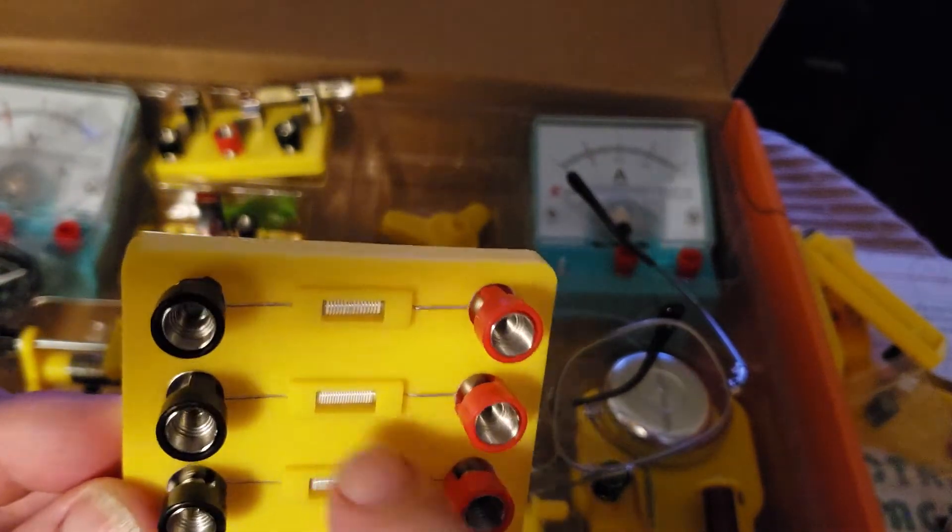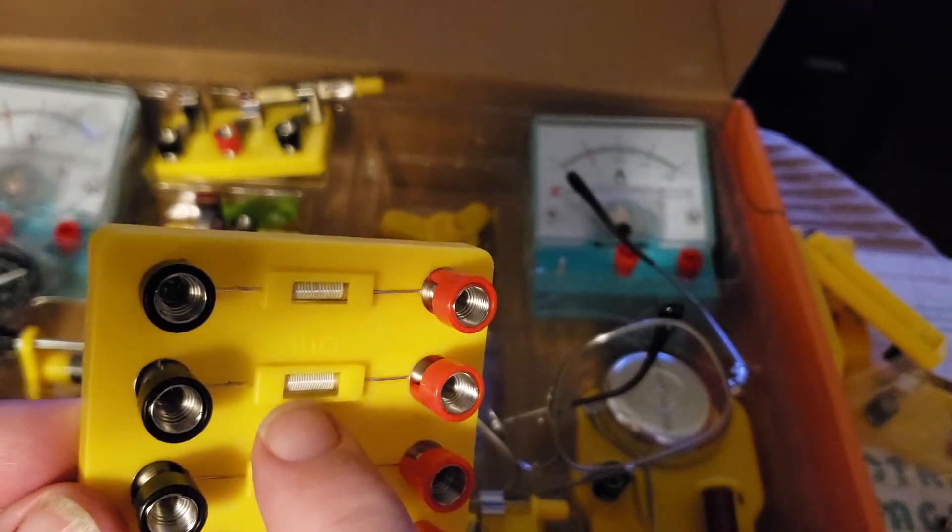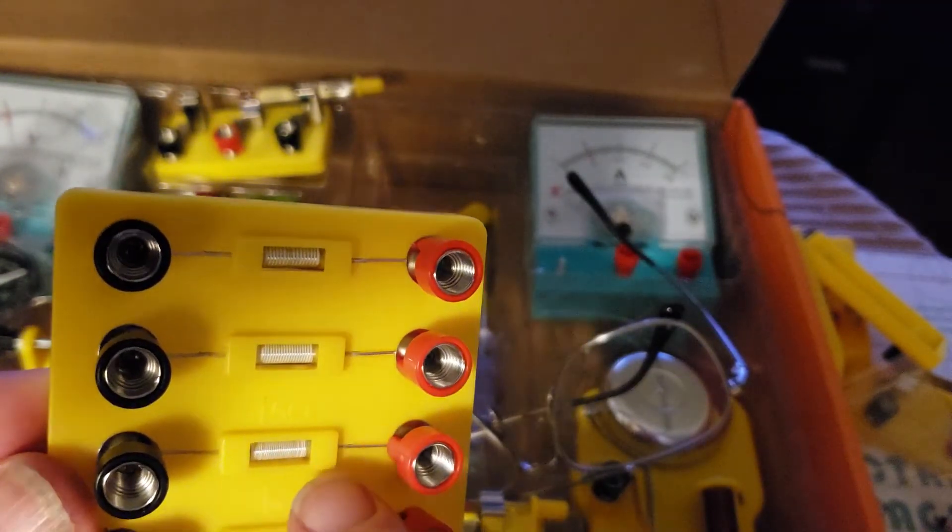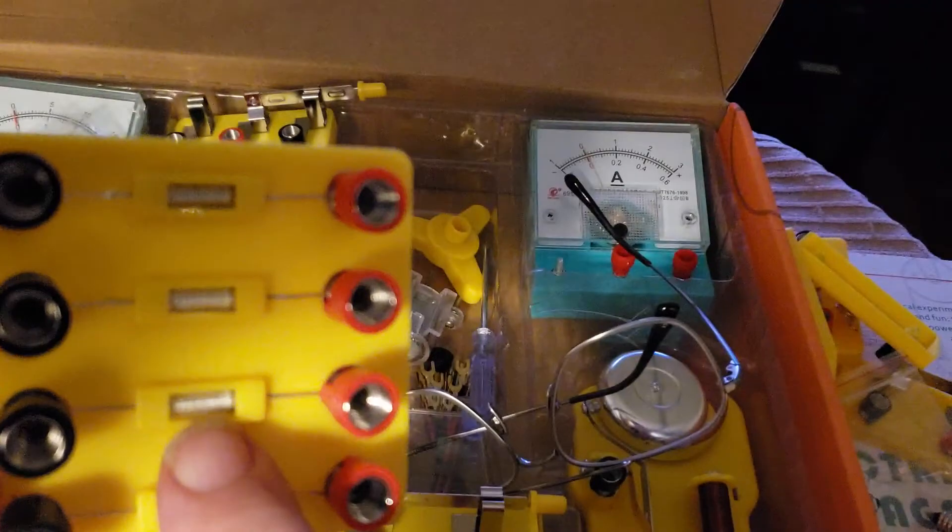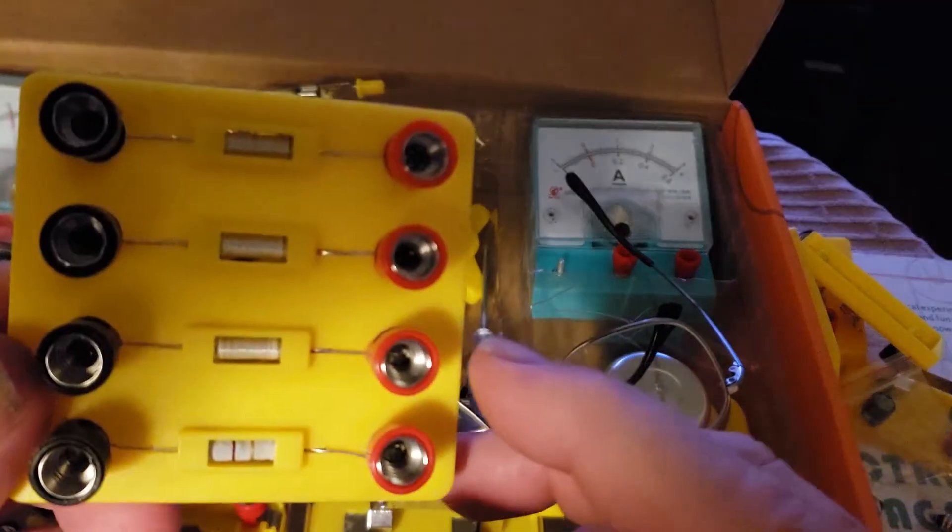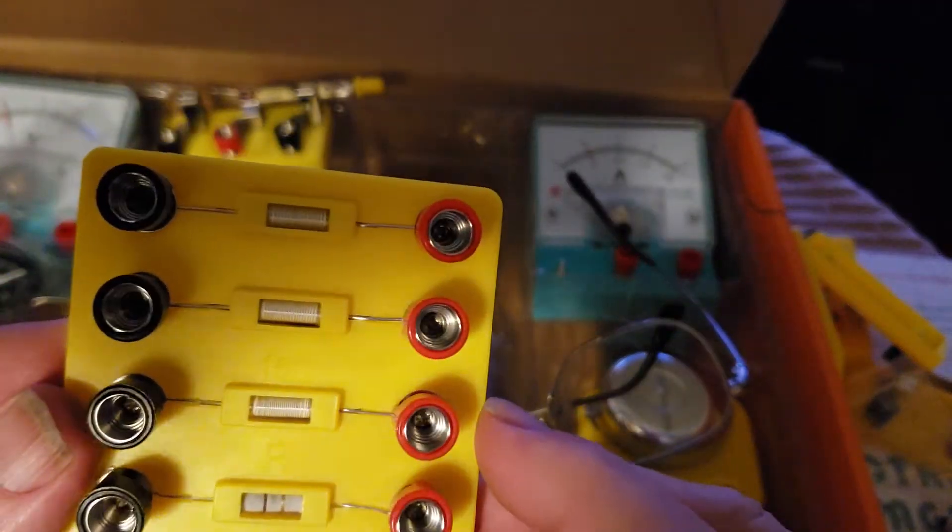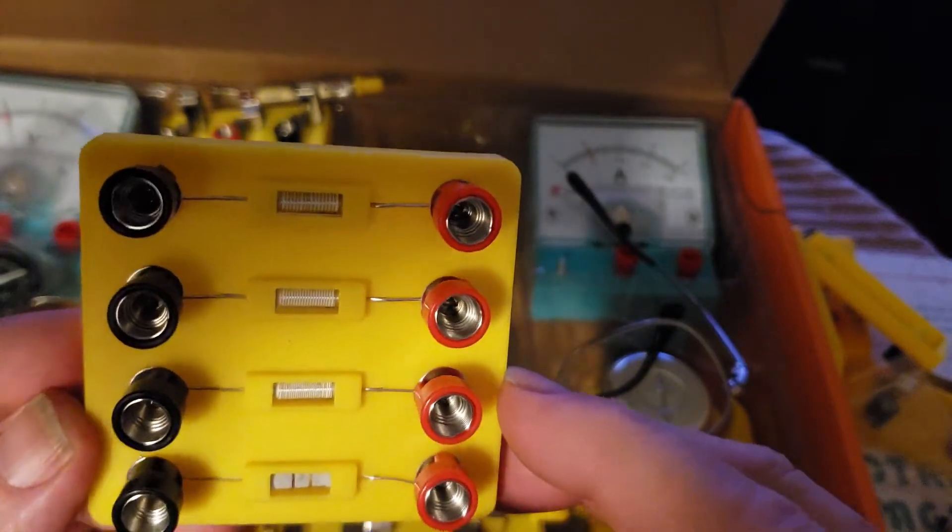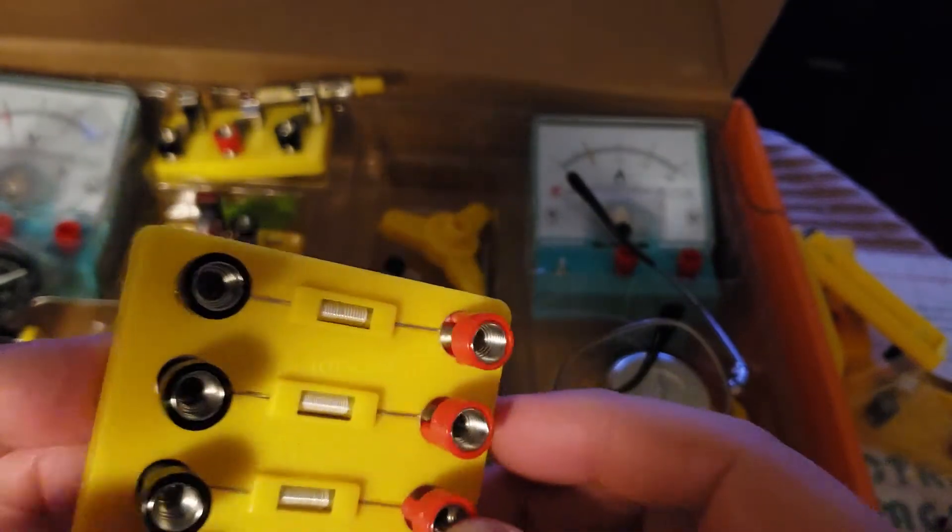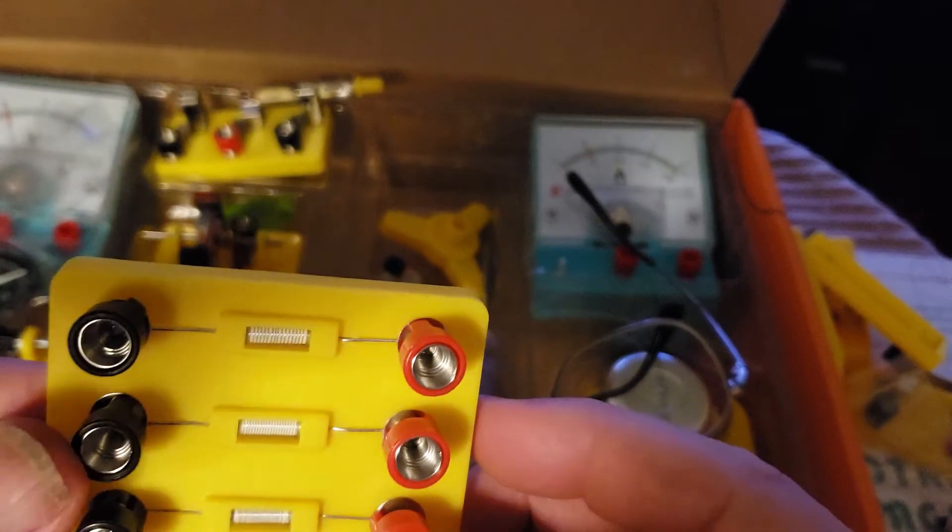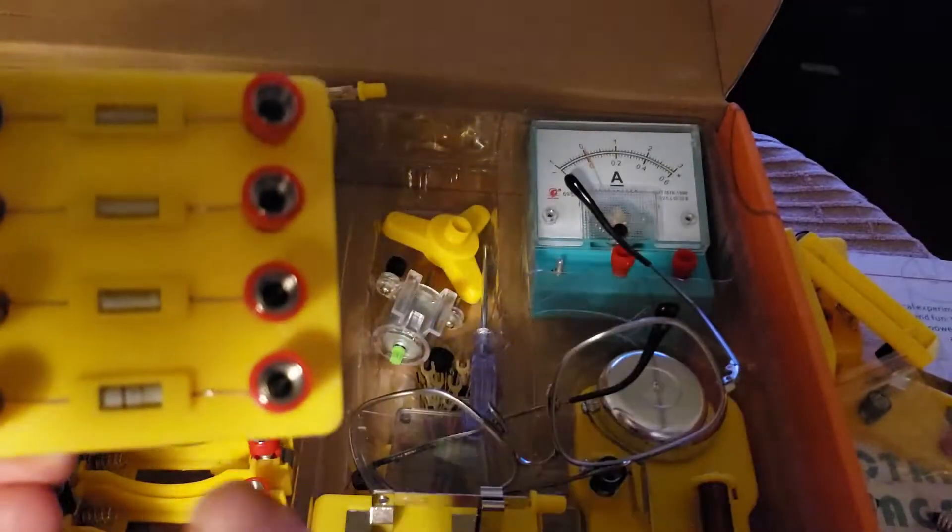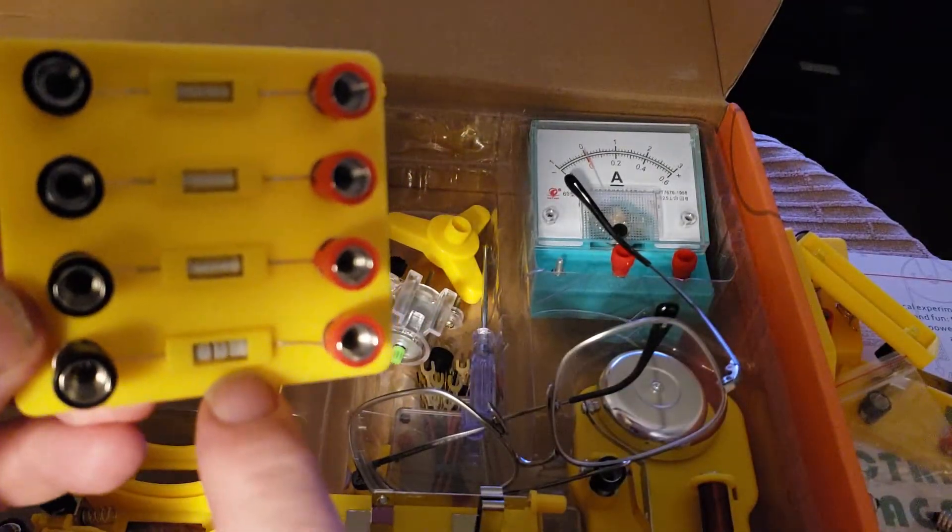And the 15 ohm has three times the number of windings. It's a very visual representation that resistance is proportional to length in the conductor. Then there's a normal color-coded resistor.